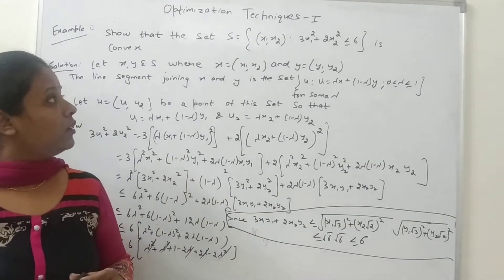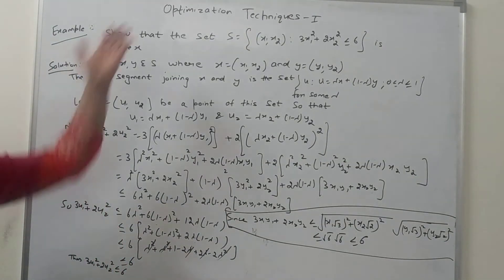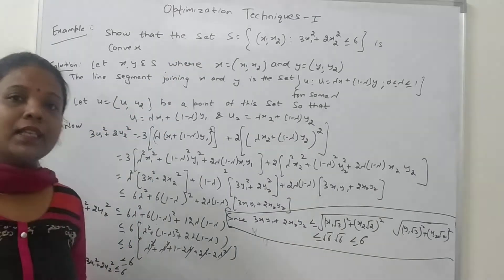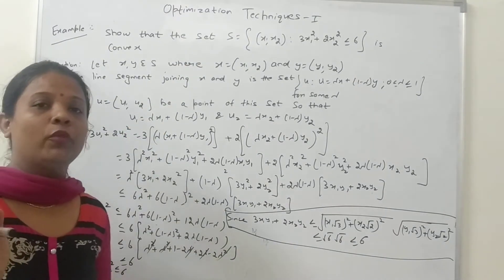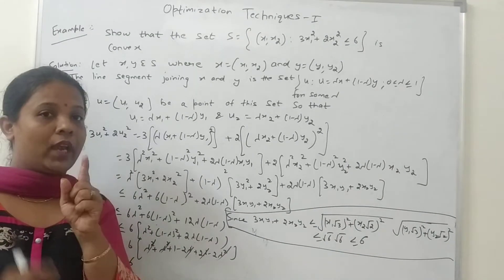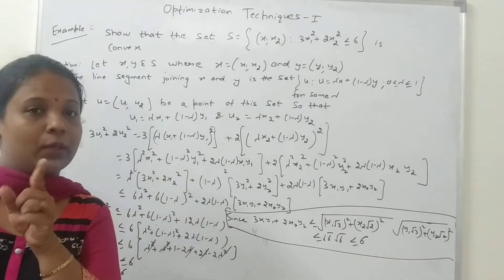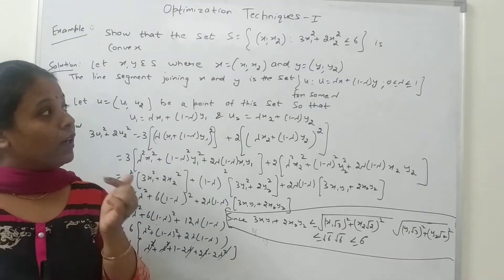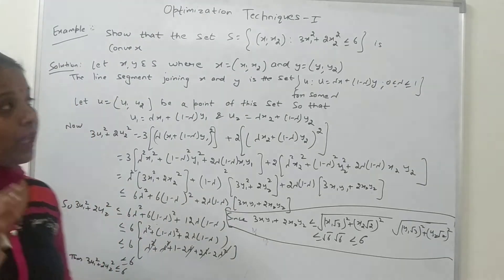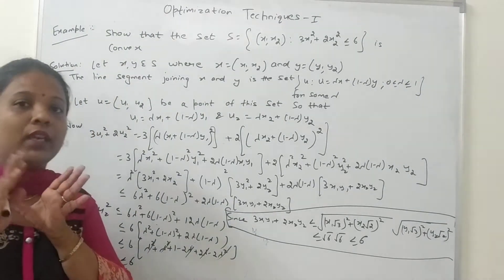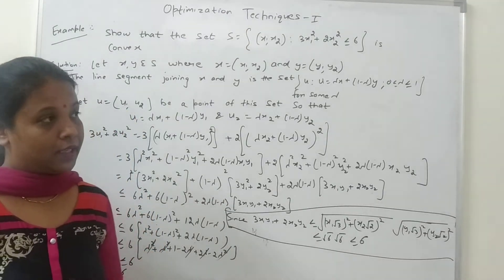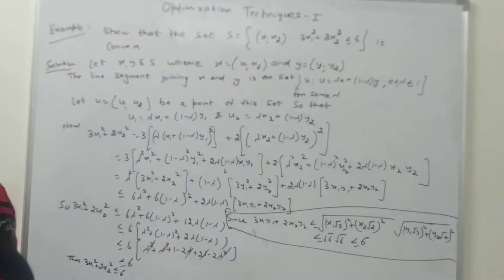Good morning students. Today we will discuss the topic of optimization techniques 1. In our previous lecture we covered the definition of a convex set. A convex set is a set in which if we join any two points by a line segment, that line segment itself will be included in that set — it should lie in the same set. That set is called a convex set.